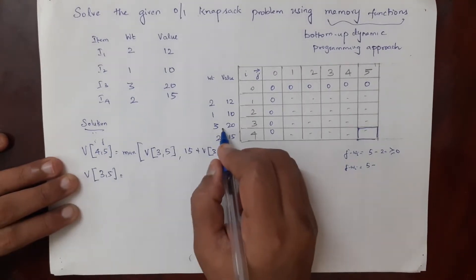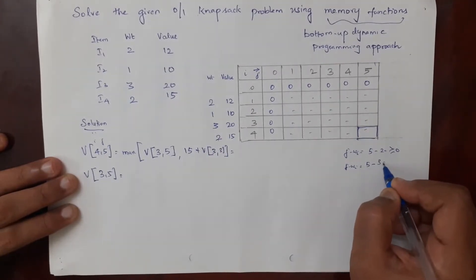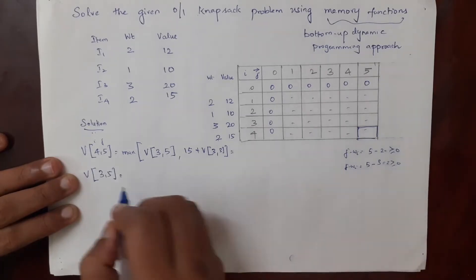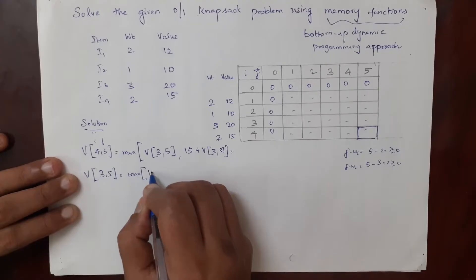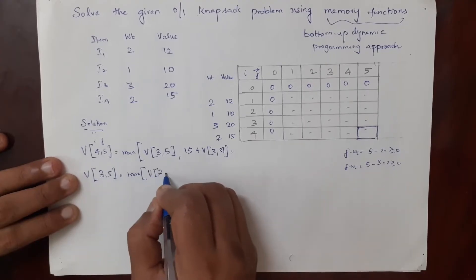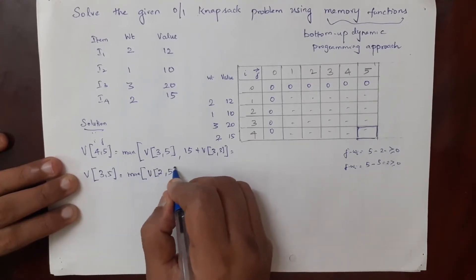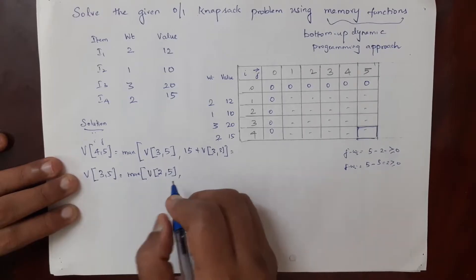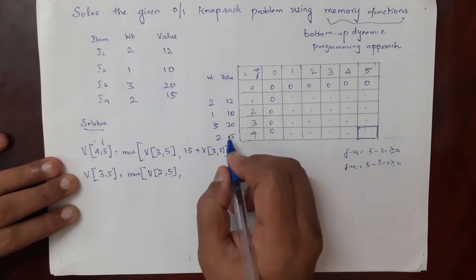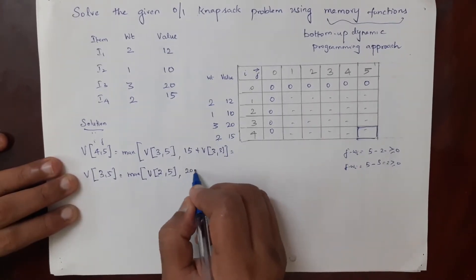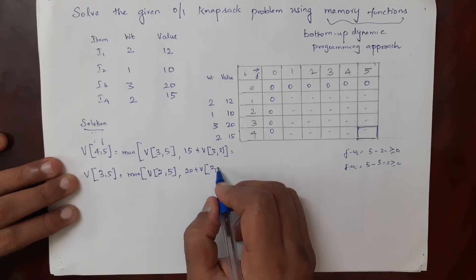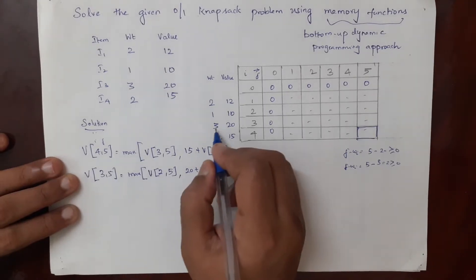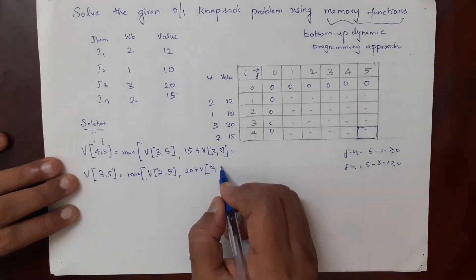Now for v of 3 comma 5: j minus wi is 5 minus the weight of the third item (3) = 2, which is greater than or equal to 0. So we use the same formula: v(2,5), comma the value of the third item (20) plus v of i minus 1 = v(2, j minus wi) = v(2,2).